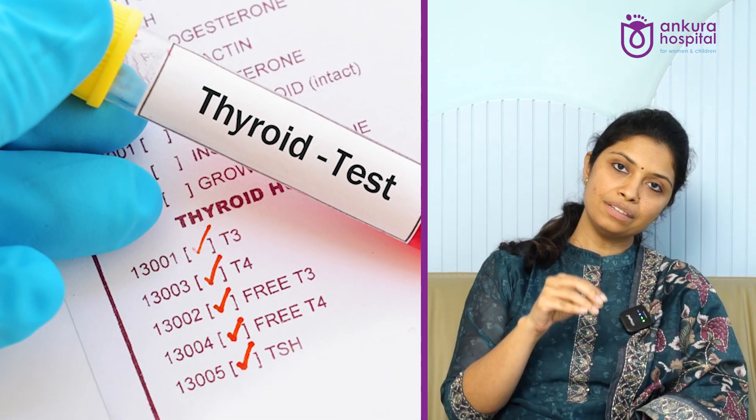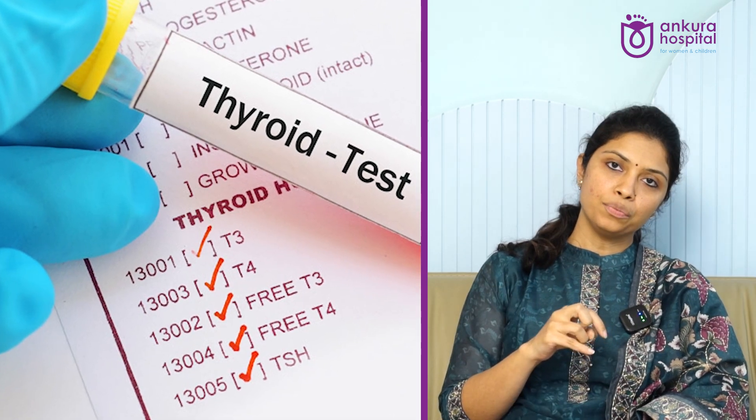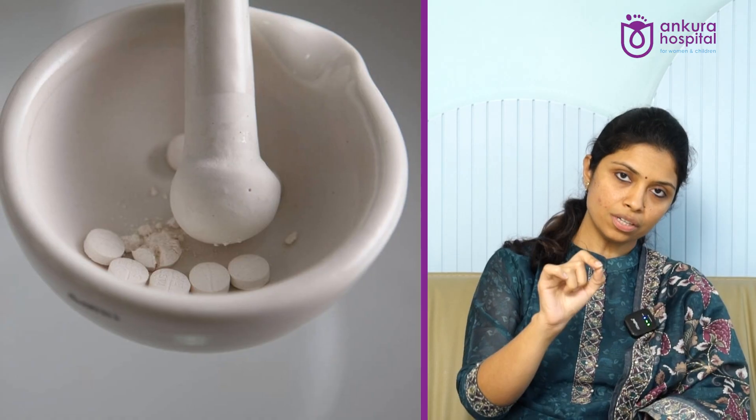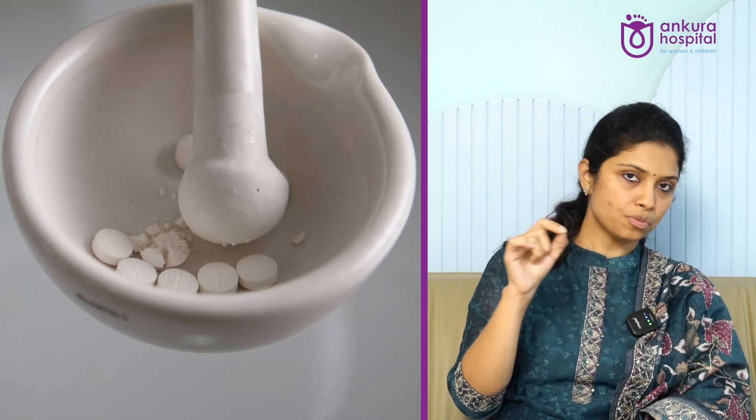We diagnose this condition with a few simple tests called TSH, T4, and T3. Since this condition can lead to mental retardation if not treated on time, it is very important to start treatment as early as possible. The treatment is simple — it involves giving a tablet of thyroxine. There is no syrup formulation available in India, so the thyroxine tablet has to be crushed and mixed in water or the mother's breast milk and given to the baby once in the morning daily.